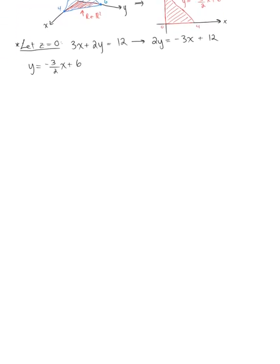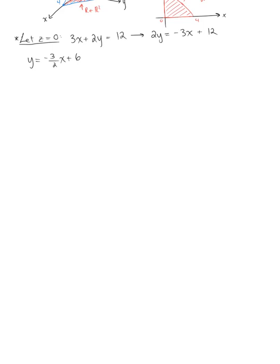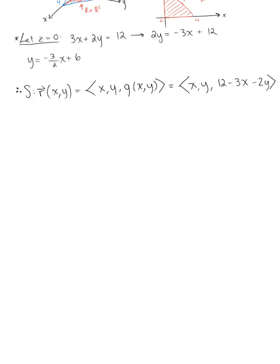We can now explicitly define our surface. Our surface S can be defined as the vector-valued function in terms of X and Y: (X, Y, 12 minus 3X minus 2Y), for the region R defined as the set of all ordered pairs (X, Y) where Y is between 0 and negative 3 halves X plus 6, and X is between 0 and 4.